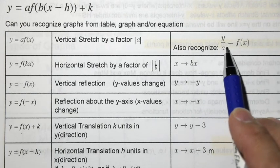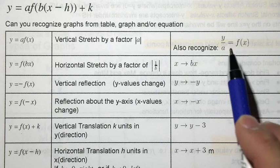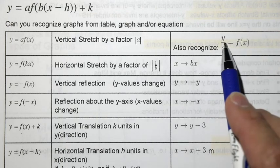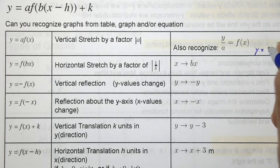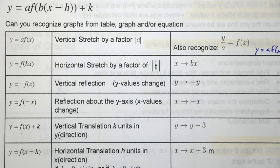Also recognize that you can also see it this way, y over a. If this is a fraction, or if there's fractions, then you'll have to keep that in mind. But you can also rearrange this to say y is equal to a times f of x, and then you'll be able to see it clearly.